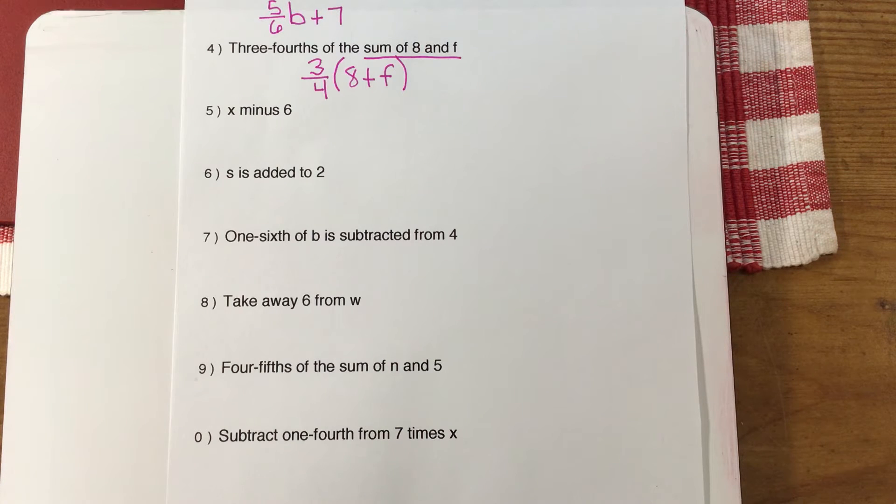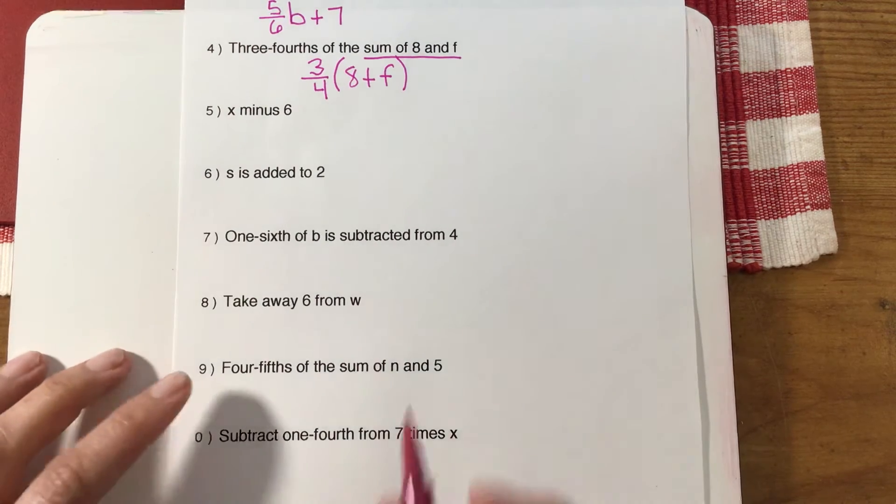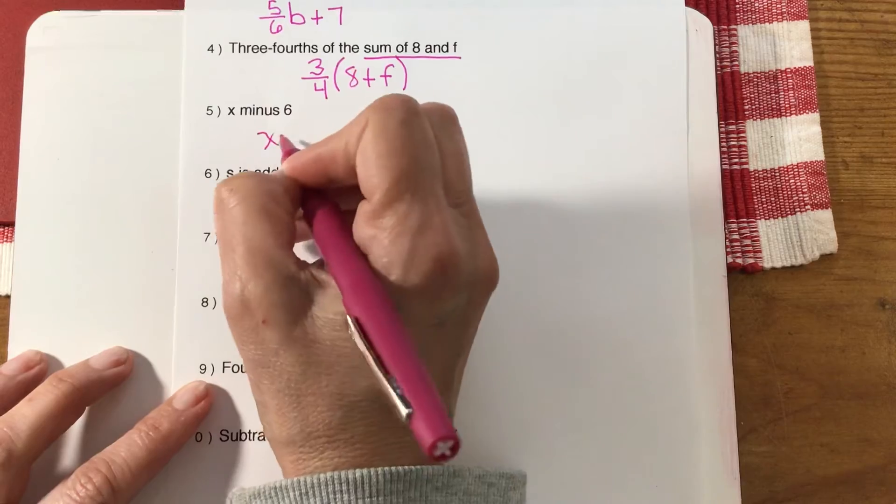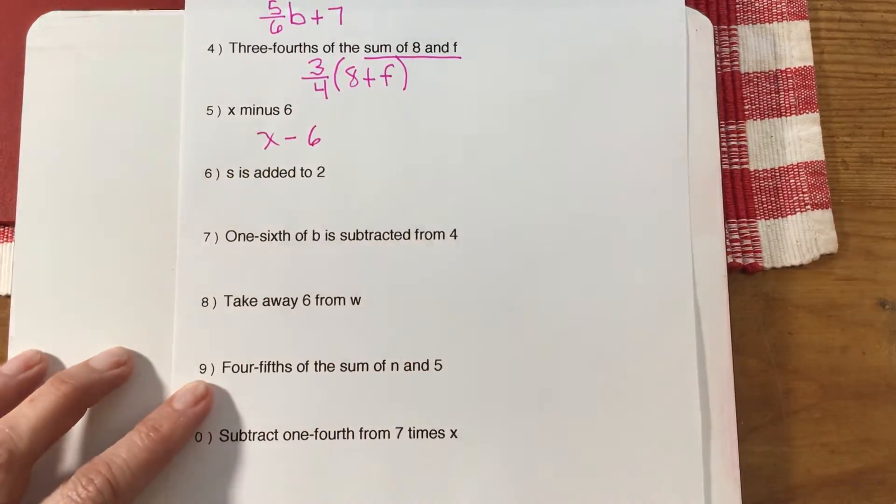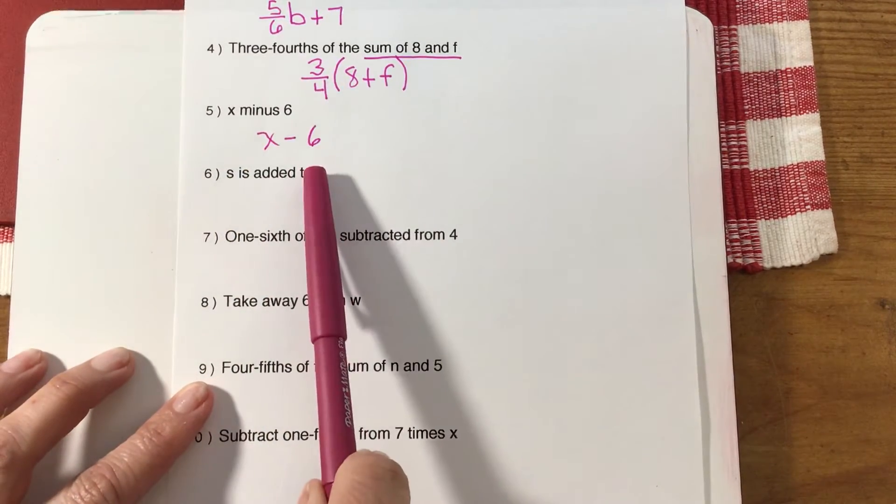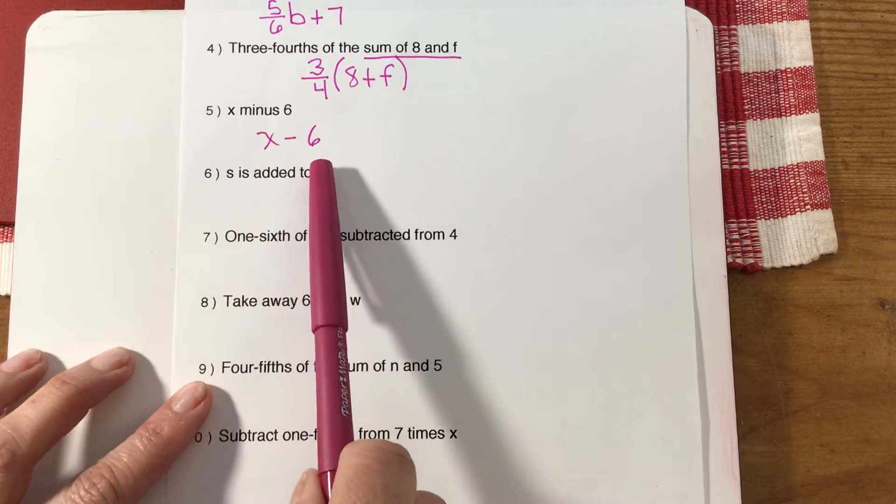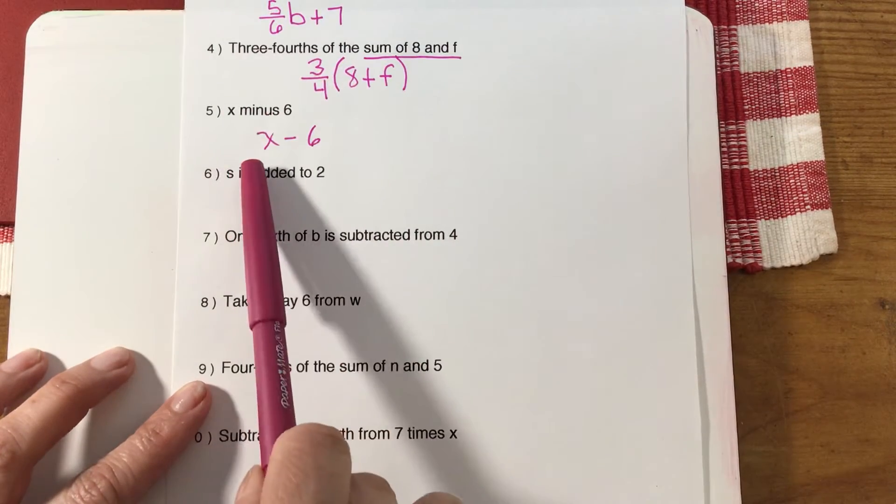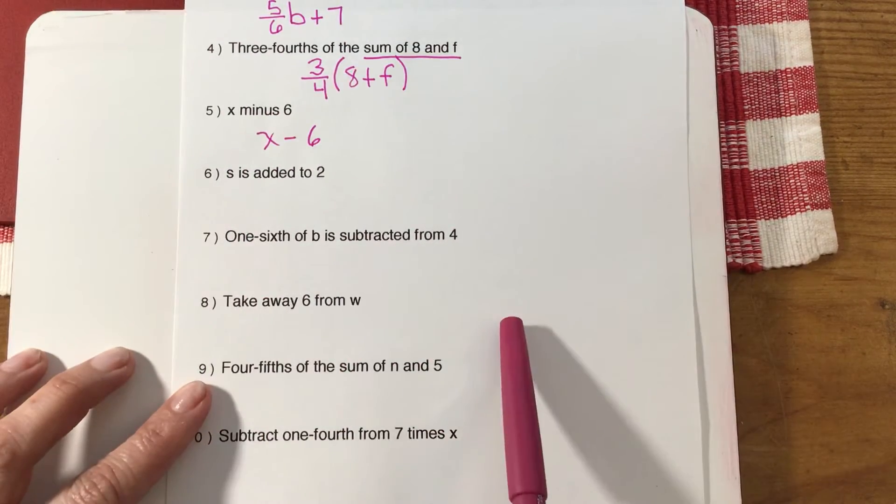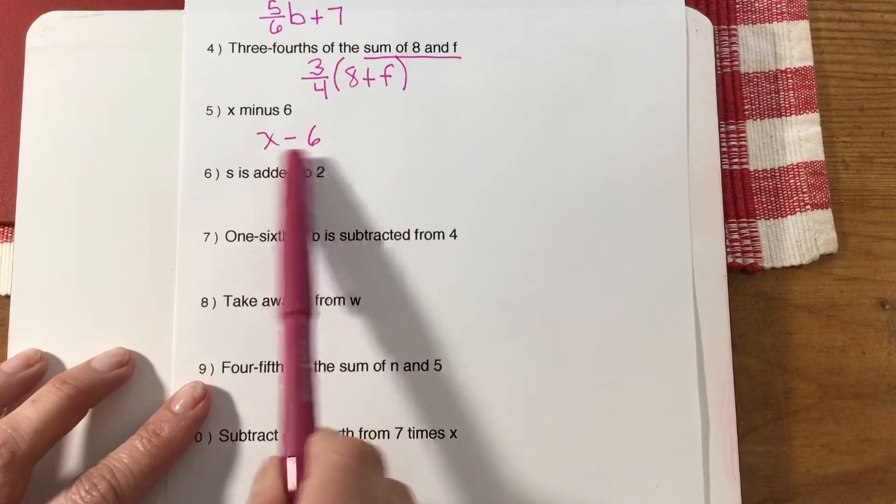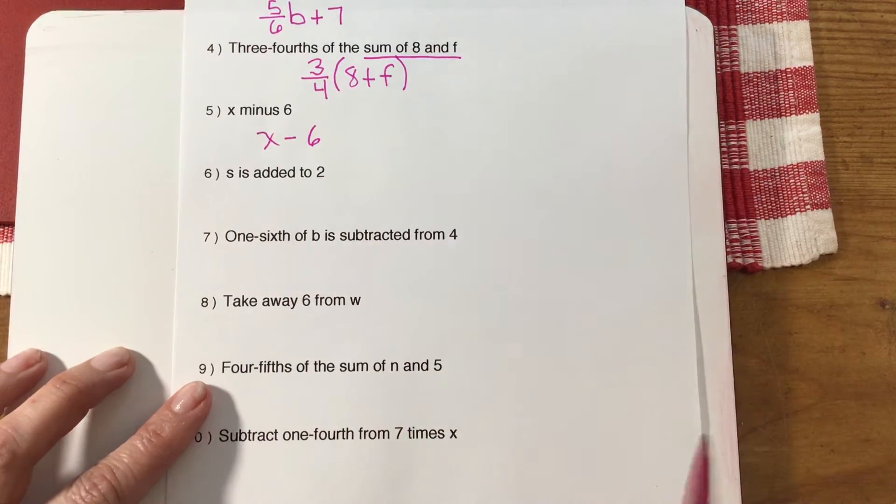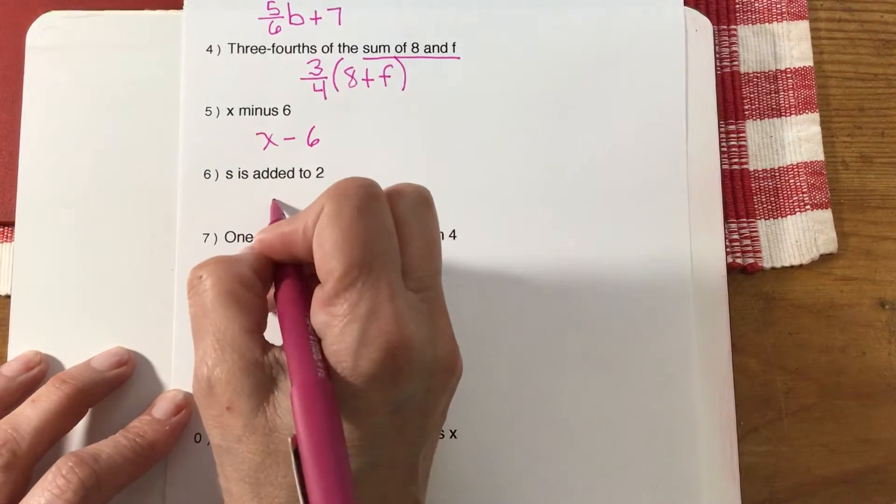Okay, we're back. This next one is x minus 6. Now it has to be in that order. It can't be in any other order because if you wrote it the other way around it would be 6 minus x. You cannot use commutative property when you're talking about subtraction. s is added to 2—that's pretty easy—s + 2.